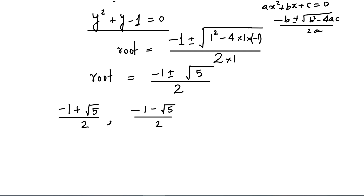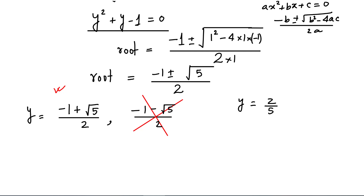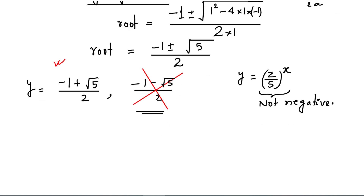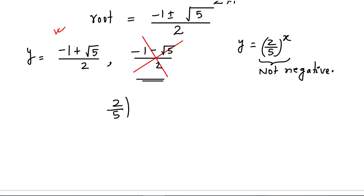Now, the negative root is not acceptable. Since y equals 2 by 5 raised to the power x, this term cannot be negative — it can be zero but not negative. So the root minus 1 minus root 5 over 2 is rejected. Therefore the only valid root is y equals root 5 minus 1 divided by 2.